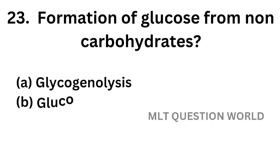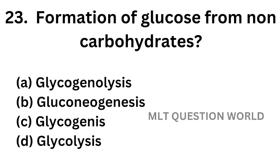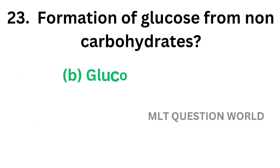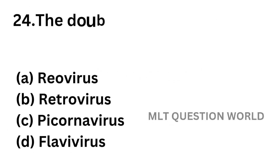Question number 23. Formation of glucose from non-carbohydrates: option A, Glycogenolysis; option B, Gluconeogenesis; option C, Glycogenesis; option D, Glycolysis. The correct answer is option B, Gluconeogenesis. The formation of glucose from non-carbohydrate sources is called gluconeogenesis.